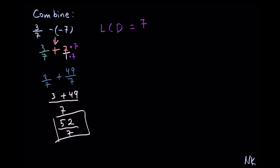If you need to convert this into a mixed number, just do a long division. We have 7 into 52. 7 goes into 52 seven whole times. So we get 7 times 7, which is 49. The difference between 52 and 49 is 3. So 7 goes into 52 seven whole times, and we have a remainder of 3 out of 7.